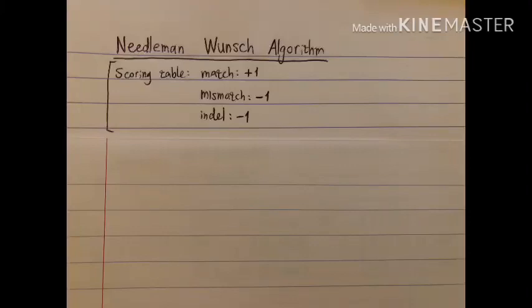If you want to see how well two sequences align with each other from their beginning to their ends, be it DNA or protein, you can use the Needleman-Wunsch algorithm.